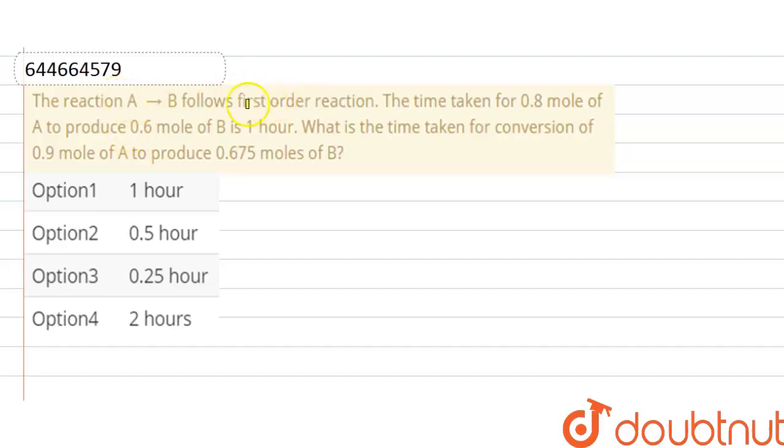The reaction A to B follows first order reaction. The time taken for 0.8 mole of A to produce 0.6 mole of B is one hour. What is the time taken for conversion of 0.9 mole of A to produce 0.675 moles of B?